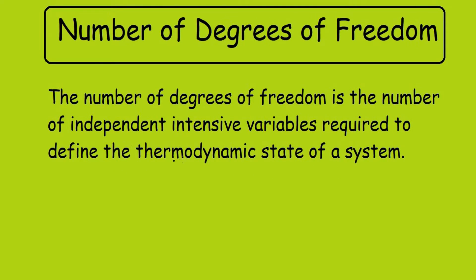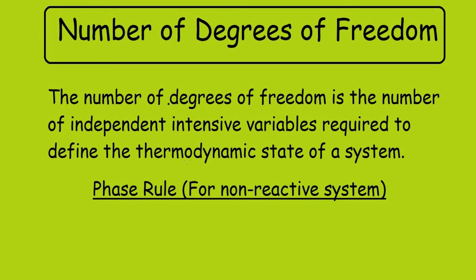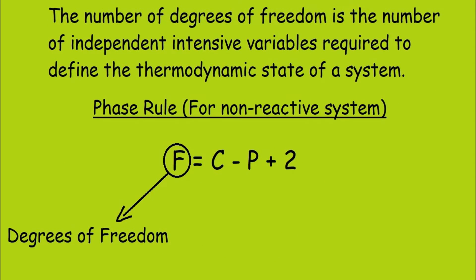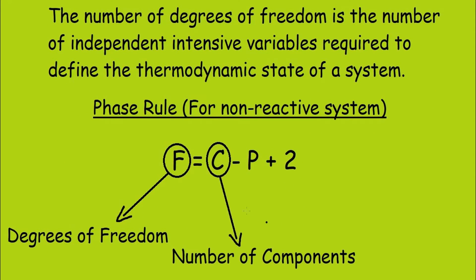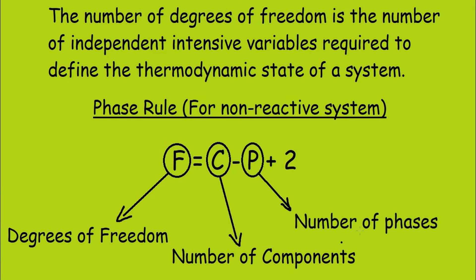The phase rule for a non-reactive system is given by F equals C minus P plus 2, where F is the number of degrees of freedom, C is the number of components, and P is the number of phases.